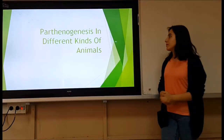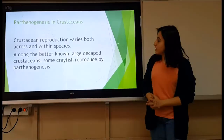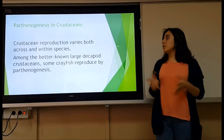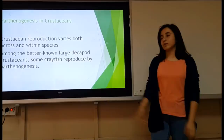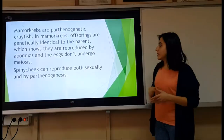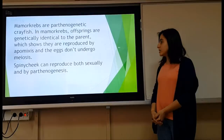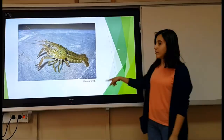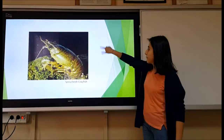Parthenogenesis in different kinds of animals: crustacean reproduction varies both across and within species. Among the better-known large decapods, crayfish can reproduce by parthenogenesis. Marmorkrebs are parthenogenetic crayfish whose offspring are genetically identical to the parents, showing they reproduce by apomixis — they are also entirely female. Spiny cheek crayfish can reproduce both sexually and by parthenogenesis.